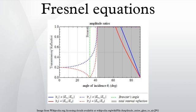The fraction of the incident power that is reflected from the interface is given by the reflectance R, and the fraction that is refracted is given by the transmittance T. The media are assumed to be non-magnetic. The reflectance for S polarized light and the reflectance for P polarized light are given by their respective equations. The second form of each equation is derived from the first by eliminating θT using Snell's law and trigonometric identities.